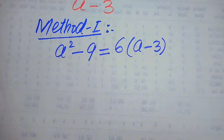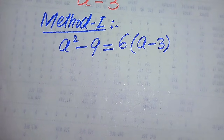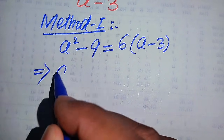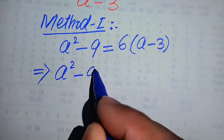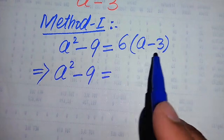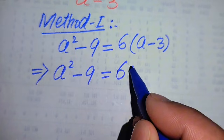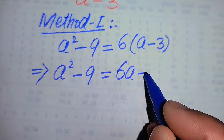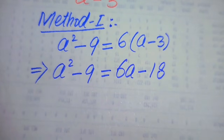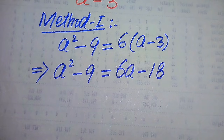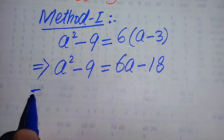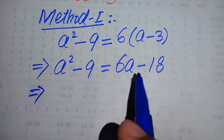In the next step we need more simplification. We have a² minus 9 equals, and we multiply 6 on both terms: 6a minus 6 times 3, which becomes 18. So we have a² minus 9 equals 6a minus 18.